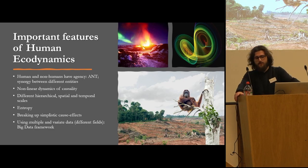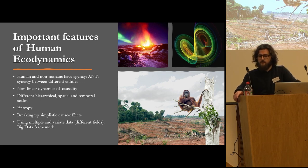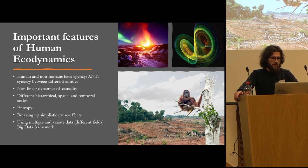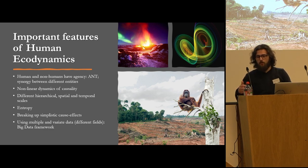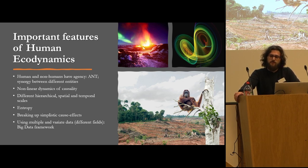The most important features of human ecodynamics are that we place agency to both humans and non-humans. I argue that this is a very similar approach to that of Latourian actor-network theory. And in reality, this allows us to analyze the synergies between different entities, irrespectively of their human or non-human features. We also use an approach based on non-linearity, and in this way we try to break up with simplistic cause-and-effect models.